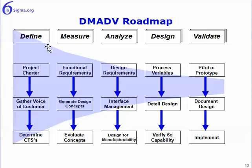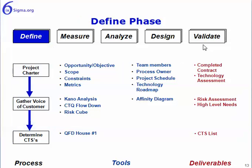In the DMADV roadmap, we Define, Measure, Analyze, Design, and then Validate. In the Define phase, we have a project charter as well, gathering voice of customer and determining CTS — critical-to-satisfaction — which can be an internal or external customer. Again, the tools we would use in each of these steps and the deliverables are outlined here.